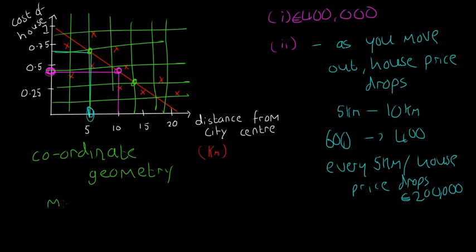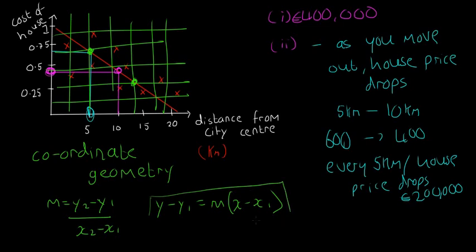Luckily we have videos on coordinate geometry as well. You have to use formulas like M is equal to Y2 minus Y1 over X2 minus X1, and then Y minus Y1 is equal to M by X minus X1. So if they ask you for the coordinates of the line of best fit, you have to pick coordinates from the grid, and you have to sub them into these formulas here to find out the equation of the line of best fit.